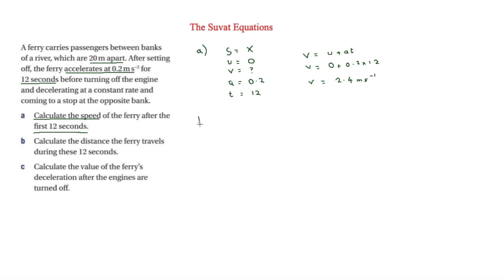Part B asks us to calculate the distance the ferry travels during these 12 seconds. We again list S, U, V, A, and T. S is now what we're looking for. U is still 0, V is now known as 2.4 (though we won't rely on it), A remains 0.2, and T is 12.